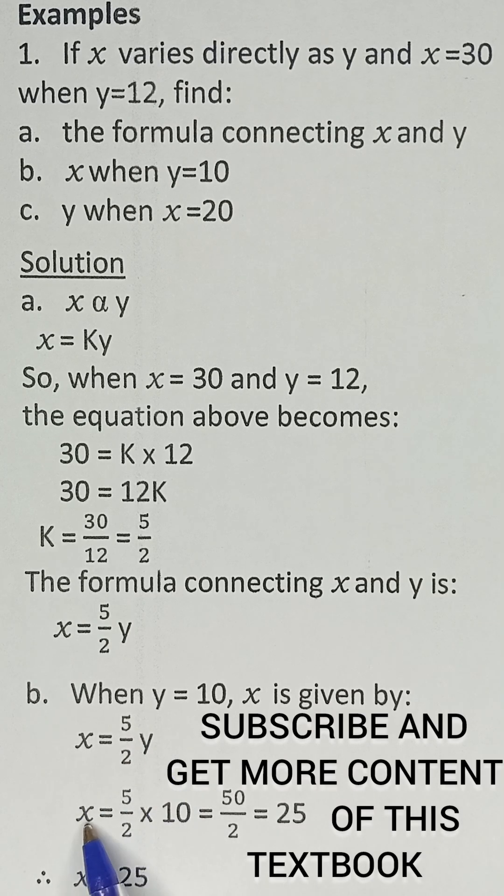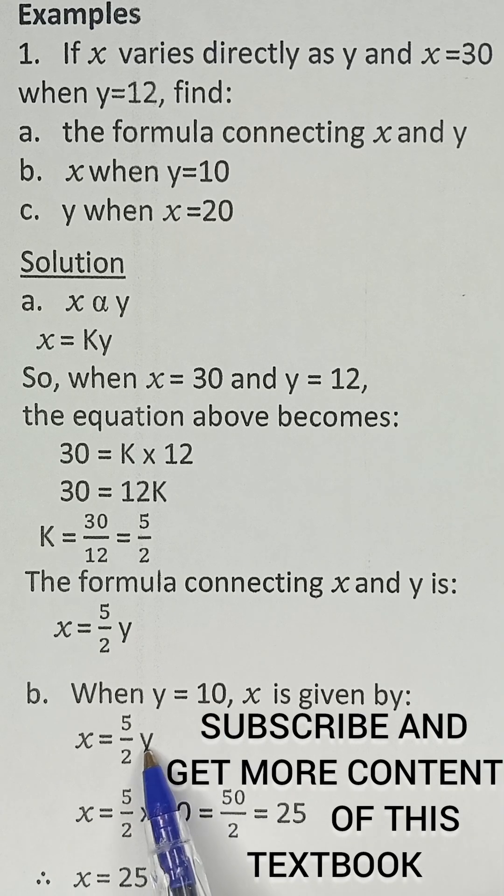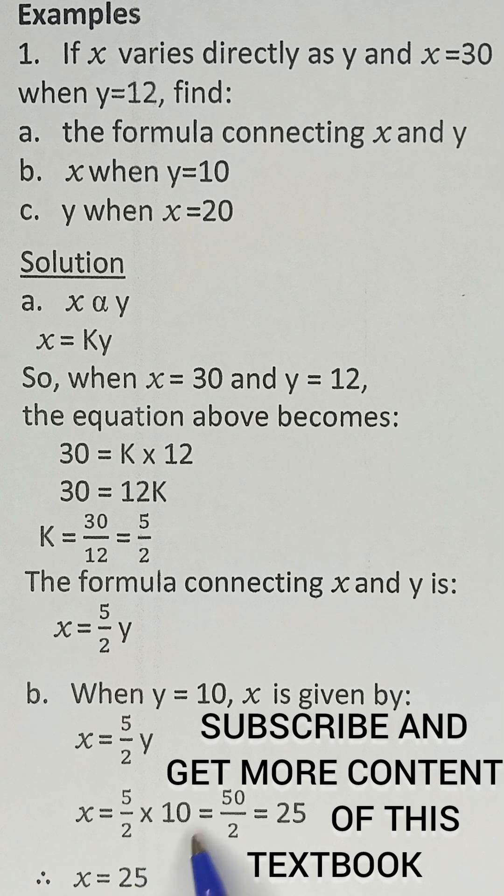So now X equals 5 over 2 multiplied by Y is 10. Don't forget Y is 10. So in place of this Y, we multiply the 5 over 2 by 10. So 5 multiplied by 10 is 50, and then 2 multiplied by 1, because it's like 10 over 1, is 2. So we now have 50 over 2, which is 25. So X is equal to 25 as the final answer.